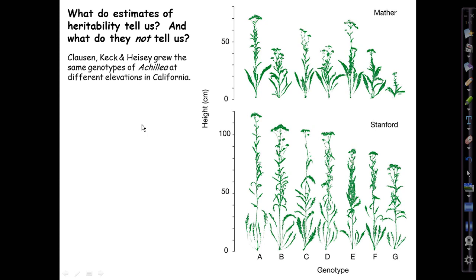We're going to illustrate with a classic study from the 1940s and 50s by Clausen, Keck, and Heisey on yarrow, Achillea, a composite plant that grows wild throughout California and other parts of North America. It attracted them because they found it growing at very different elevations in different parts of the state, and they noticed that plant height was highly variable every place they studied the plant and heritable in each environment.